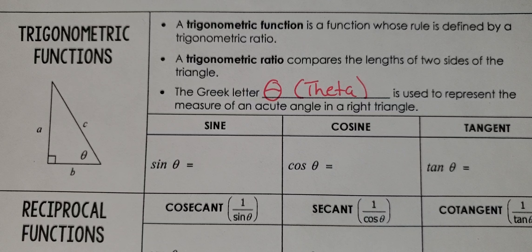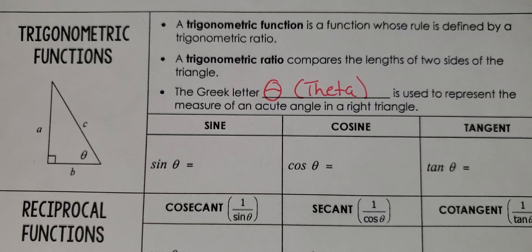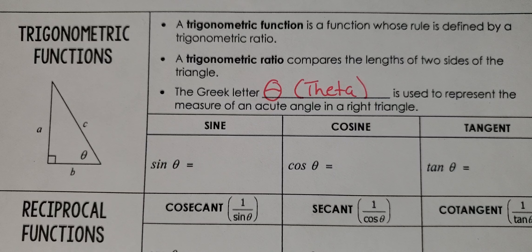So what are trigonometric functions? Trigonometric functions are a function whose rule is defined by a trigonometric ratio. The three trigonometric ratios that we should know by now are sine, cosine, and tangent. A trigonometric ratio compares the length of two sides of a right triangle.